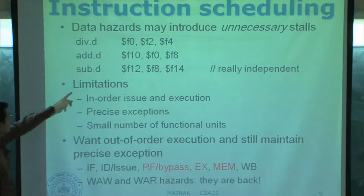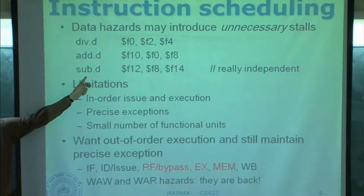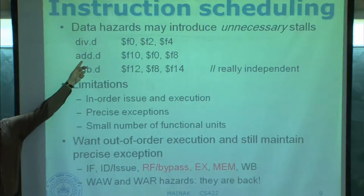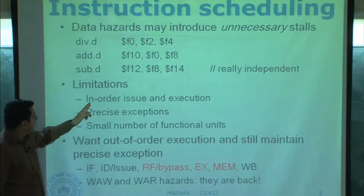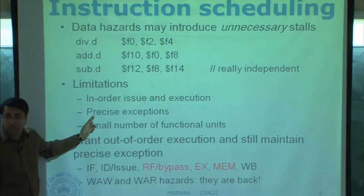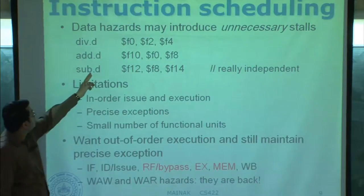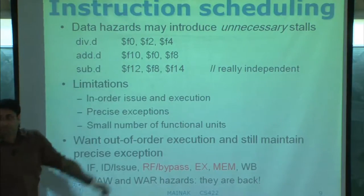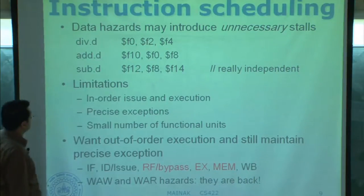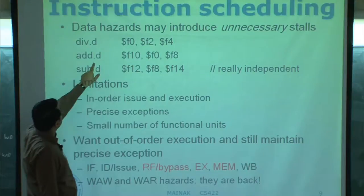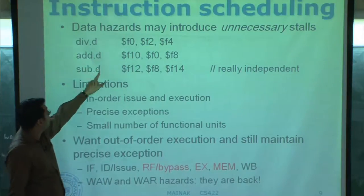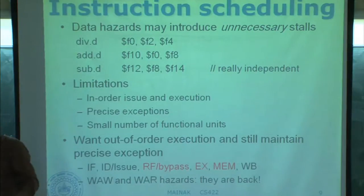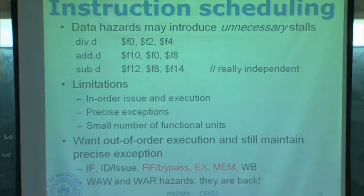This instruction will have to wait until the division operation completes and produces F0. Since we have a constraint to go in order one after another, this third instruction will also have to wait — it cannot be fetched, or even if it is fetched, it has to wait in the pipeline simply because the second instruction cannot execute at this point. In-order issue and execution disallows this instruction to overtake the previous one, because if it overtakes there are dangers such as arithmetic exceptions being raised by an earlier instruction after the later one has already completed.